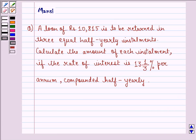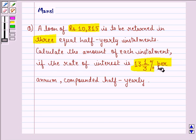Hi and welcome to the session. Let's work out the following question. The question says a loan of rupees 10,815 is to be returned in three equal half-yearly installments. Calculate the amount of each installment if the rate of interest is 13 1/3 percent per annum compounded half-yearly. Let us start with the solution to this question.